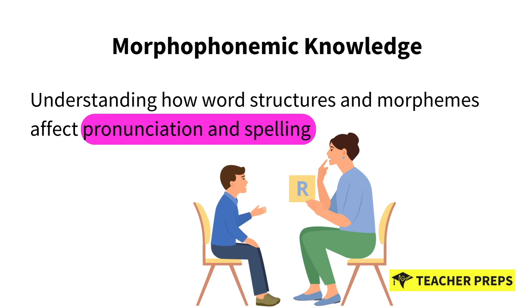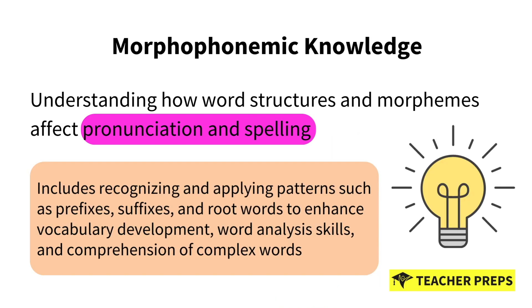Graphophonemic knowledge involves understanding how word structures and morphemes — meaningful units of language — affect pronunciation and spelling. This understanding includes recognizing and applying patterns such as prefixes, suffixes, and root words to enhance vocabulary development, word analysis skills, and comprehension of complex words.